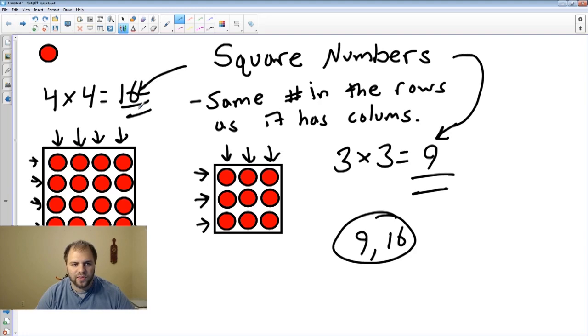That does it for square numbers. It's a very simple concept to understand. We want arrays to have the same number of rows as they do columns, and that's our square numbers. Thank you and join me next time as we learn how to unsquare numbers.